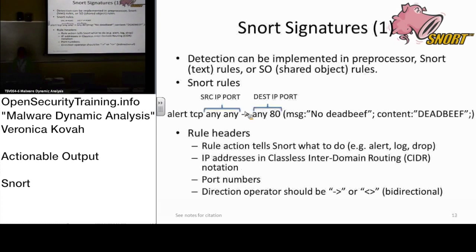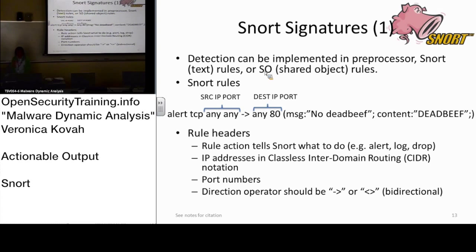How does a Snort rule look? There are actually two types. One is the text rule, which looks like what's shown here — though this example is missing the SID rule option, which is required. There is also the SO rule, which is a rule you can write in C code. The purpose of the C code is for cases where you need to do looping or complex operations, rather than simple pattern matching that you can write as a text rule.